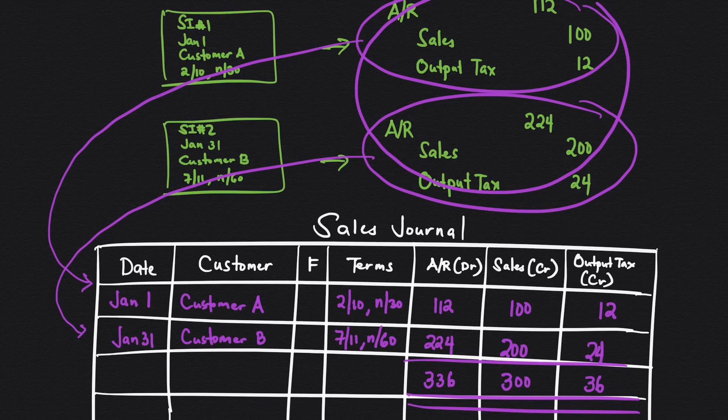Next. The next step here is posting. Meaning, you will be transferring journal entry information to the general ledger. Normally, if you don't use the special journal, you would be posting the amounts one by one. So you have a total of 6 postings. If you have 15 transactions, that's 15 times 3, 45 postings. In the sales journal, it's much simpler because before you post, you will be getting the total.